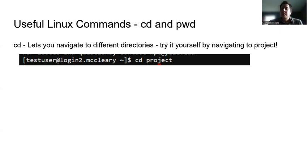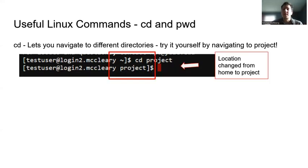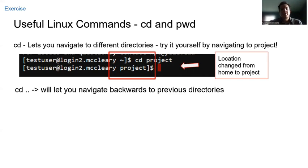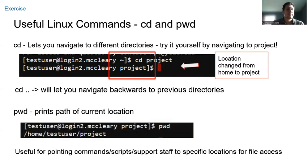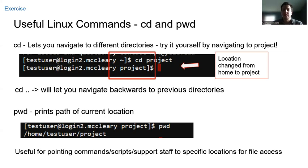The next command is `cd` and `pwd`, useful for navigation. `cd` stands for change directory and lets you navigate to different directories. To navigate to your project directory, type `cd project` from your home directory. A useful tip is that `cd ..` will let you navigate backwards, putting you back in your home directory. `pwd` will print the location of your current path, telling you where you currently are in the cluster. If you type it in your project directory, you will get a path starting with `/home/your_username` and then the project directory. This is very useful if you are storing scripts or data in a different location than where you are running.